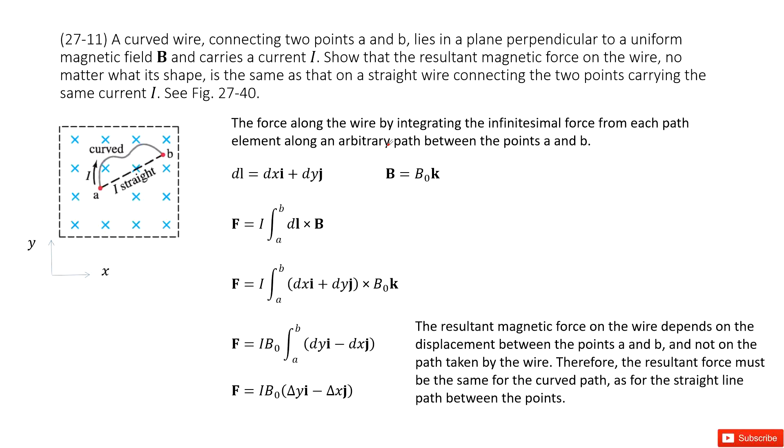Chapter 27 is about magnetism. So you can see we have a curved wire A to B. The current is I, lies in a plane perpendicular to a uniform magnetic field B. And then it asks you, the resultant magnetic force on the wire no matter what its shape is the same as a straight wire. So we need to prove that.